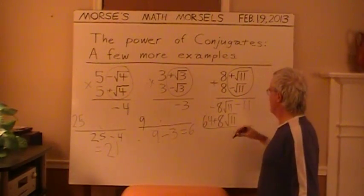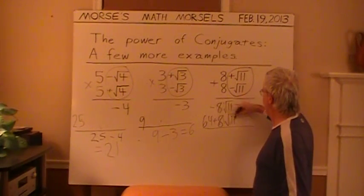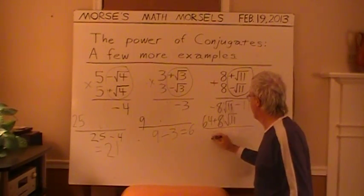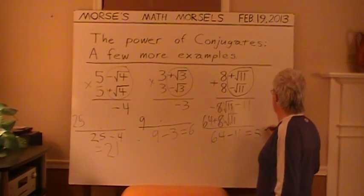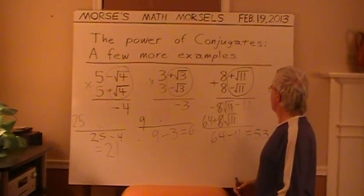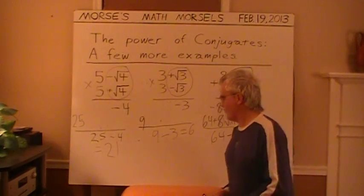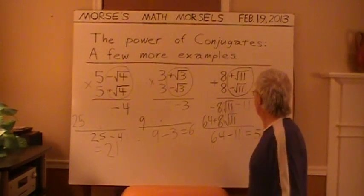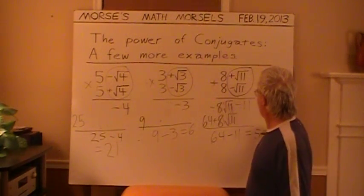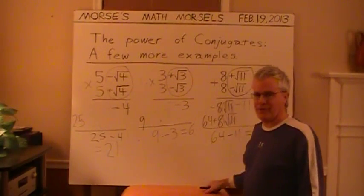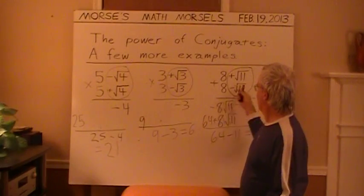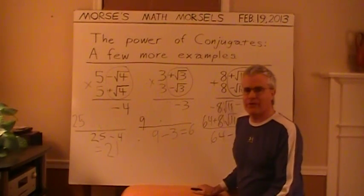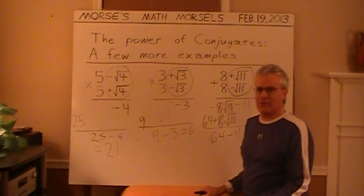Add up these terms. And as you know, these are gone. And we just have 64 minus 11 equals 53. And note that 53 is a prime number as it happens. So here was yet another way to represent 53 as a product of two factors. We had to use some radicals and generate irrational numbers to do it.